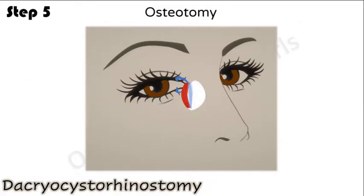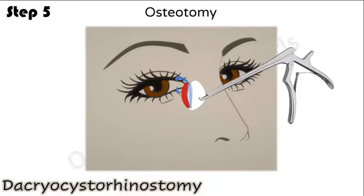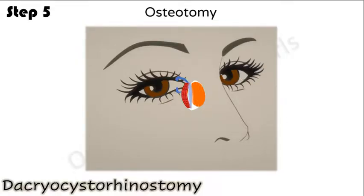Step 5 — osteotomy: an opening is made in the floor of the lacrimal fossa, approximately 10 to 15 millimeters in diameter, with a citelli or a Kerrison bone punch.